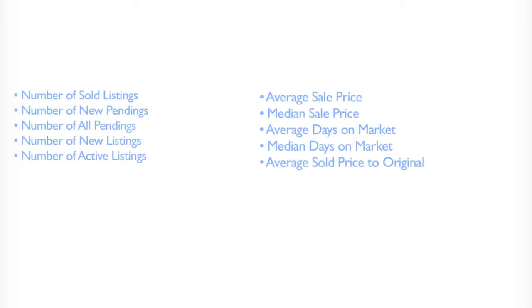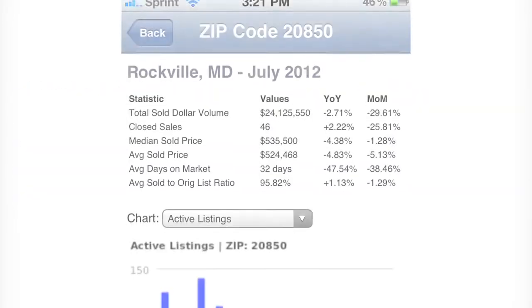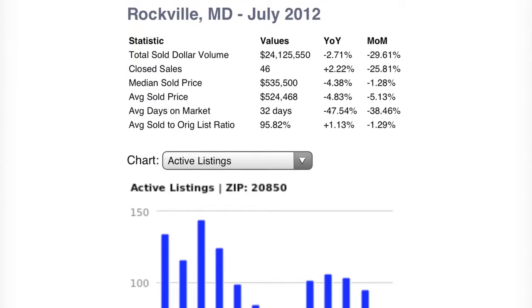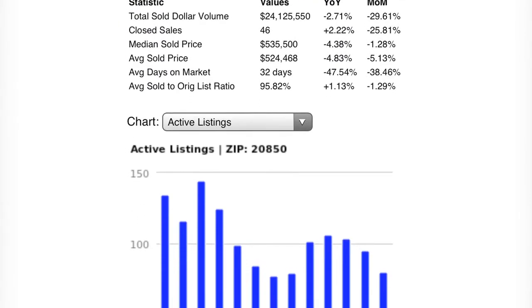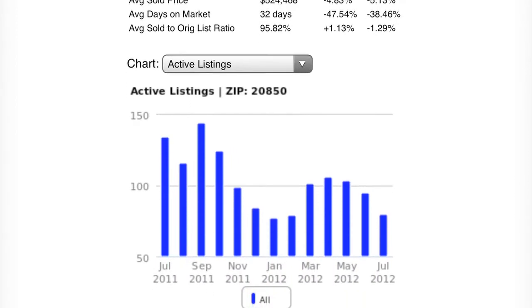Next, select your metric. You have access to 12 months' trends in every MLS zip code by these major metrics. Last, receive the data. With RBI Mobile, you're equipped with up-to-date, reliable statistics, ensuring you're always prepared to answer your client's question.